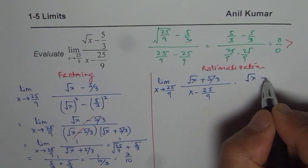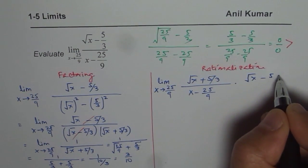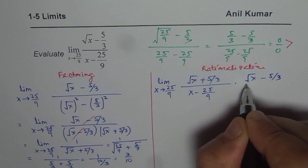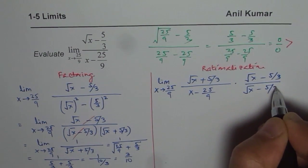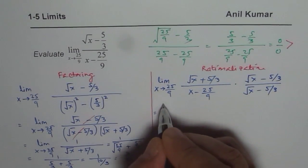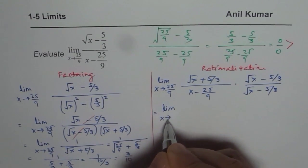right? Which has the radical part. Conjugate is square root x minus 5 over 3. We will multiply and divide by square root x minus 5 over 3 both numerator and denominator. With that what do you get?